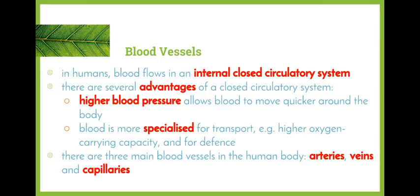One is that we are able to have much higher blood pressure. This allows the blood to move quicker around the body and obviously deliver water, in particular glucose and oxygen for cellular respiration, as well as remove wastes. It also allows blood to be more specialized for transport, allowing for higher oxygen carrying capacity, which ties back to our last video on hemoglobin, and also for defense, which we'll be looking at in more detail in the search for better health unit when we look at the different types of white blood cells.